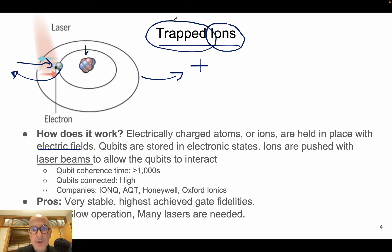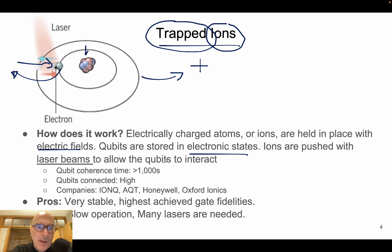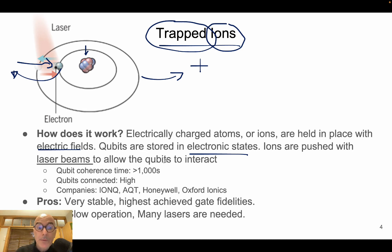How do we encode the qubit state in a trapped ions machine? The qubits are stored in an electronic state — depending on the electronic state you are either in state 0 or 1. Ions are pushed with laser beams to allow the qubits to interact. We will need to implement gates to operate on qubits, and we will also need two qubits to interact — for this interaction we use laser beams.